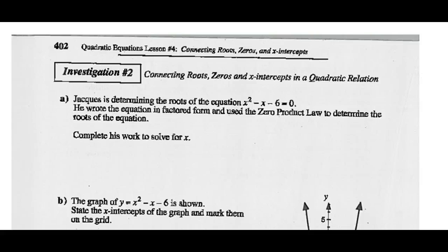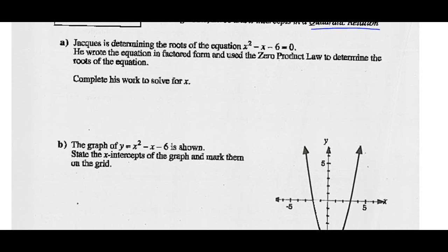Investigation 2: Connecting roots, zeros, and x-intercepts of a quadratic relation. We've graphed quads — they're parabolas opening up or down. Jacques is determining the roots of the equation x² - x - 6 = 0. He wrote the equation in factored form and used the zero product law to determine the roots; complete his work to solve for x.